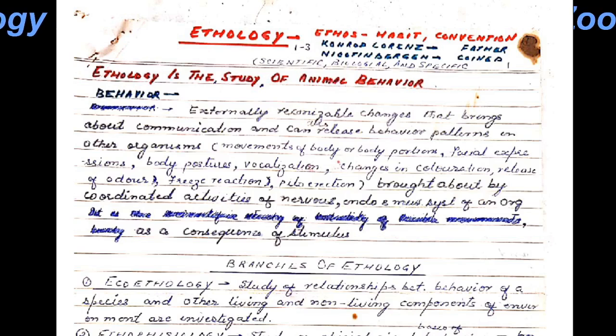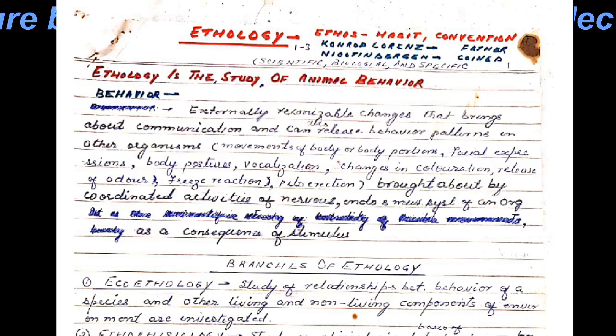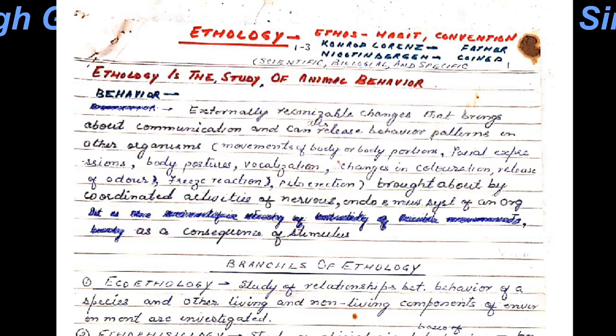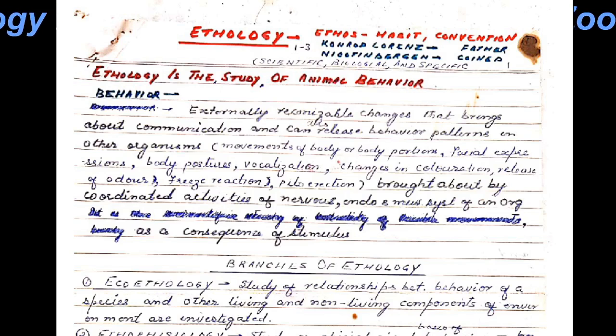These externally recognizable changes are brought about by the coordinated activities of the nervous system, endocrine system, and musculoskeletal system of an organism as a consequence of a stimulus.